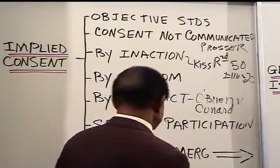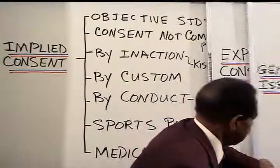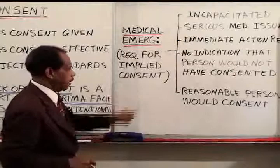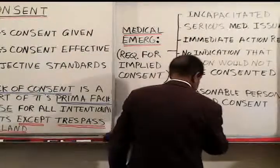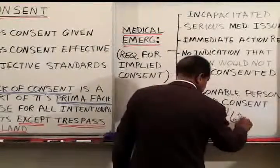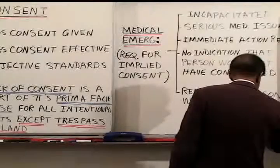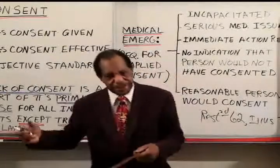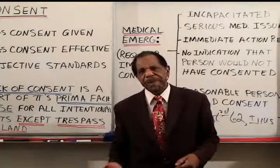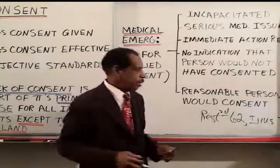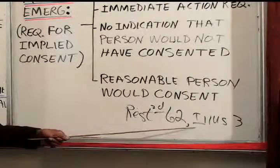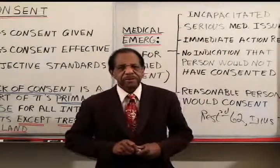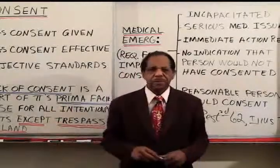For sports participation and medical emergency, the factors for medical emergency are found in Restatement Second, section 62, illustration 3 — a case of a person whose foot had been run over by a freight train, requiring immediate amputation, illustrating implied medical consent using those factors. And frankly, that is everything you need to know about consent for purposes of the bar exam. If you know this, I would hope they'd ask you a question about consent — you'd do well.